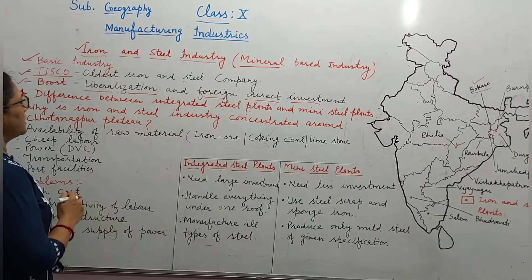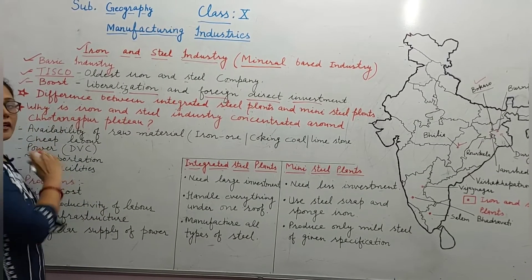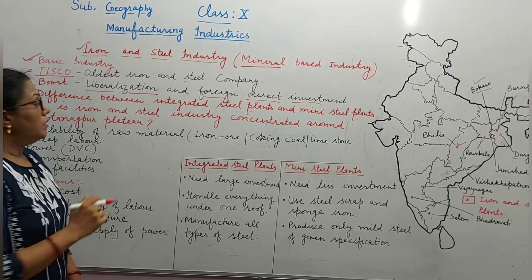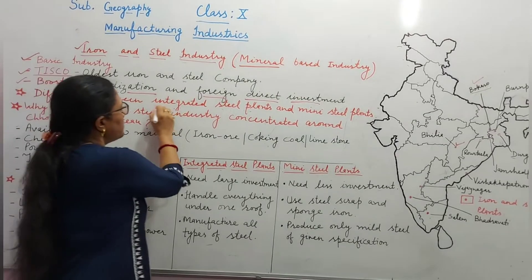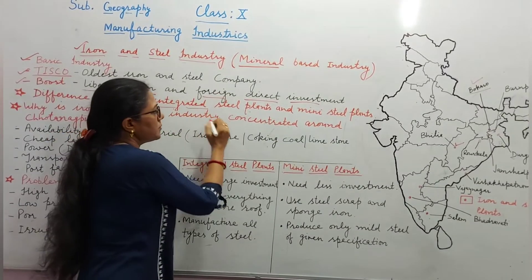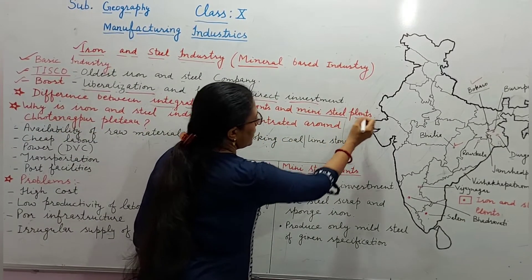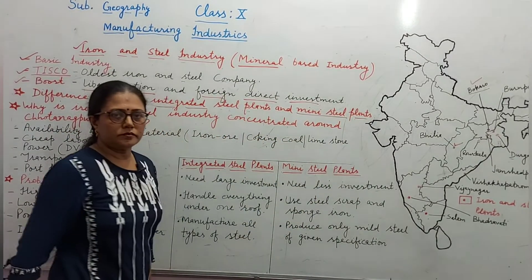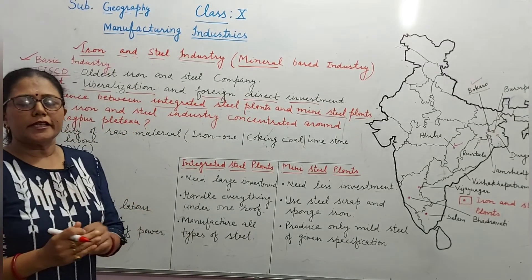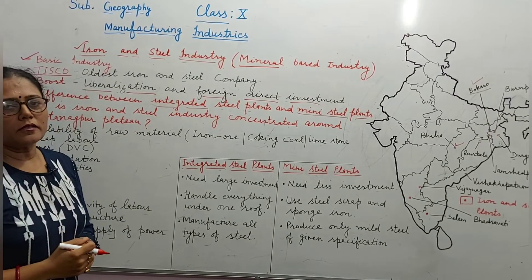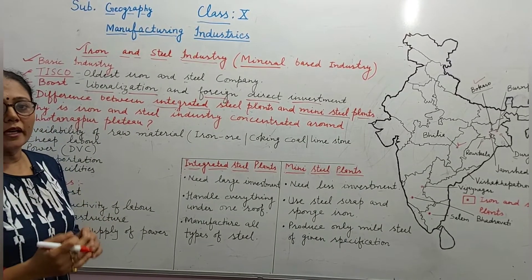Now, some plants are integrated steel plants while some are mini steel plants. What are the differences between integrated steel plants and mini steel plants?